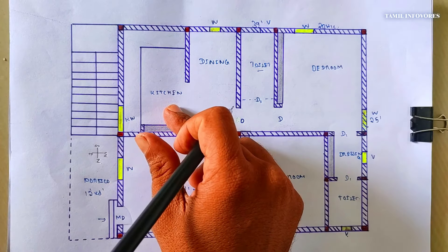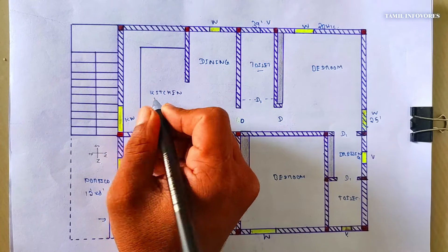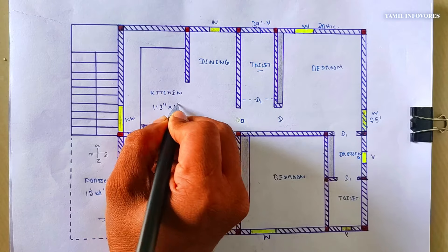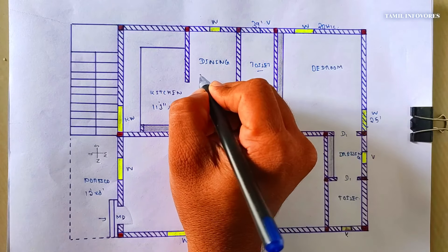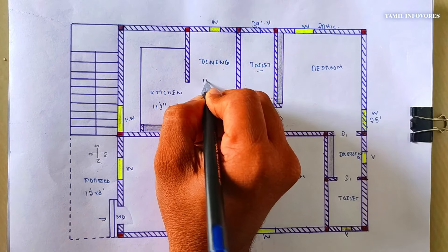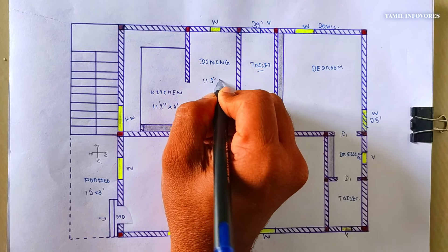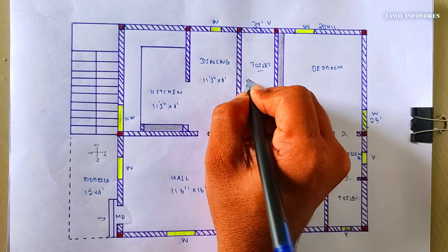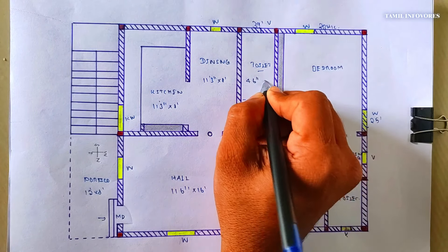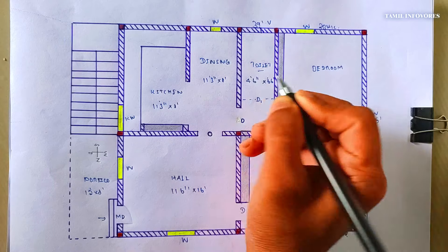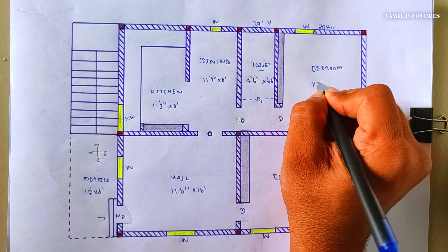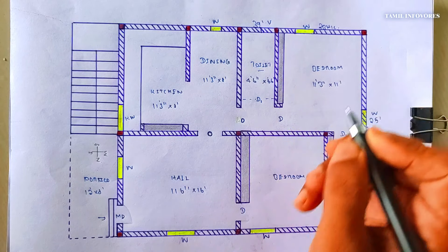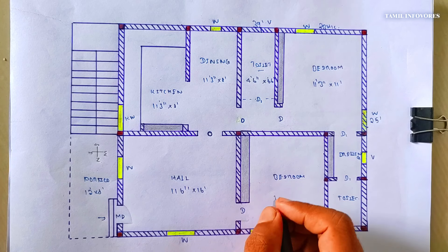Kitchen is 10 feet by 12 feet. Dining is 10 feet by 12 feet. The toilet is 4 feet by 6 feet. The bedroom is 12 feet by 12 feet, and the secondary bedroom is 6 feet.